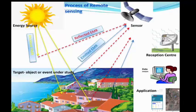Hello friends, welcome to the video on the process of remote sensing. In our previous video on basics of remote sensing, we discussed what is remote sensing, electromagnetic radiation, electromagnetic spectrum, and history of remote sensing. Today in this video, we are going to discuss components of remote sensing, spectral signatures, and the process of remote sensing.